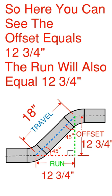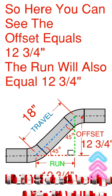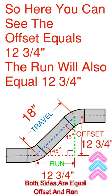So here you can see that the offset equals 12 and 3 quarters of an inch. The run will also equal 12 and 3 quarters of an inch because it's a 45 triangle.